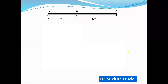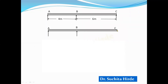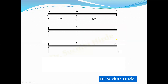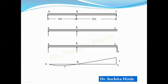Consider a two-span continuous beam, which is an indeterminate structure. Suppose you want to draw the influence line diagram for the reaction at C using the Mueller-Breslau principle. The first step is to remove the constraint — we remove the reaction at C. Then we apply a certain force that lifts this end, giving a unit deformation. Because of this, the support deflects, and this deflected shape itself represents the influence line diagram for RC. This is the Mueller-Breslau principle.